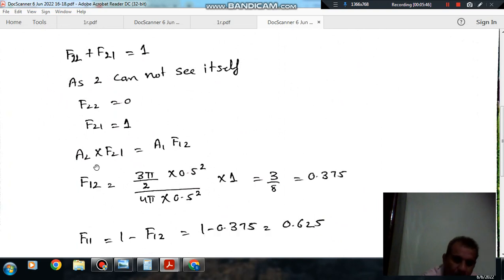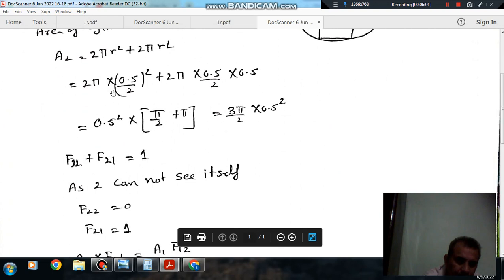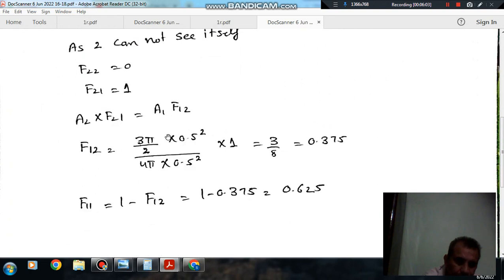So now F21 is 1, because the cylinder can see only the sphere. So F12 we can find out by putting the areas: A2 times F21 equals A1 times F12. So F12 is 0.75.